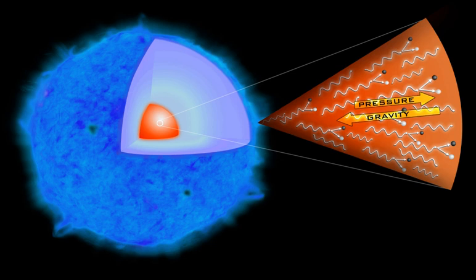The spectra of pair instability supernovae depend on the nature of the progenitor star. Thus they can appear as type II or type Ib/c supernova spectra.